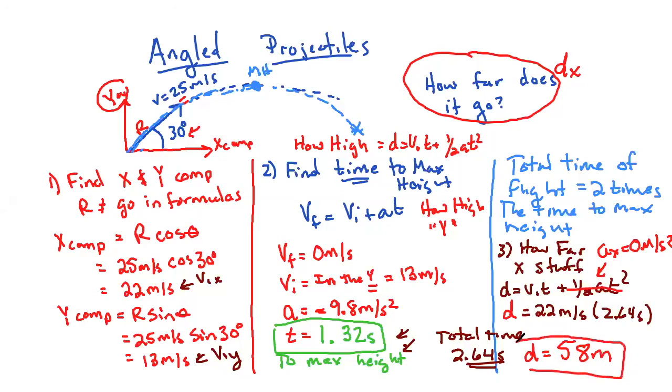So that is how you find, it does not have to be as difficult as it looks, but the steps are always going to be the same. One, find your XY components. Find the time to max height, and if the problem wants, use this formula to find how high instead of how far. But most of the time, they're going to ask for three. How far does it go? And that should get you there.